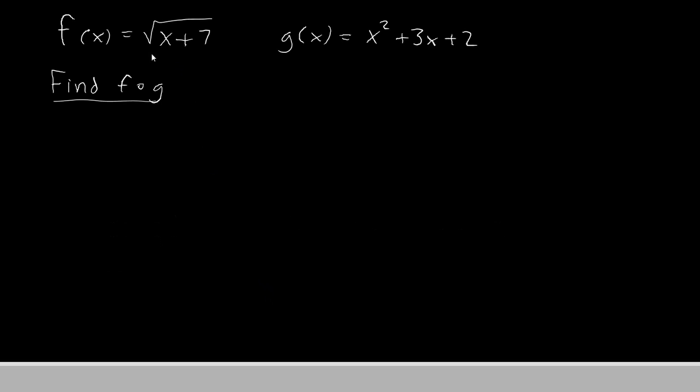Our two functions are root of x plus 7 and x squared plus 3x plus 2. I've asked you to find f circle g. The circle actually means composite. So we have to find f composite g.